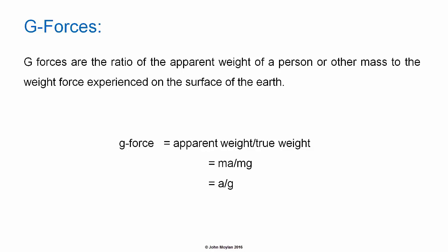G force equals MA over MG — mass times acceleration over mass times acceleration due to gravity — which is equal to A, acceleration, over G, acceleration due to gravity on the surface of the Earth.